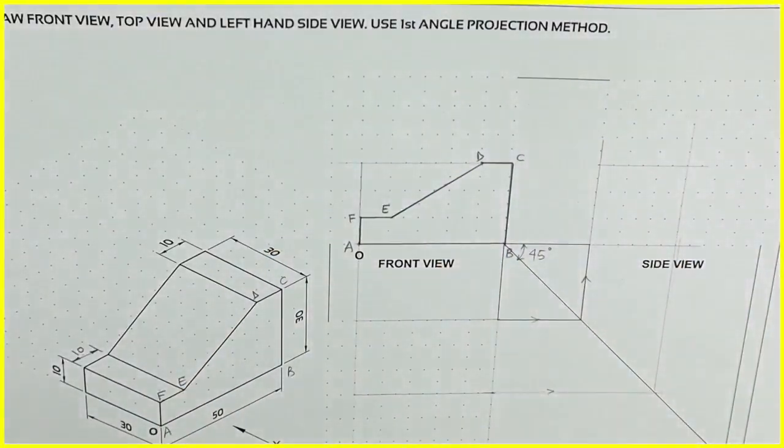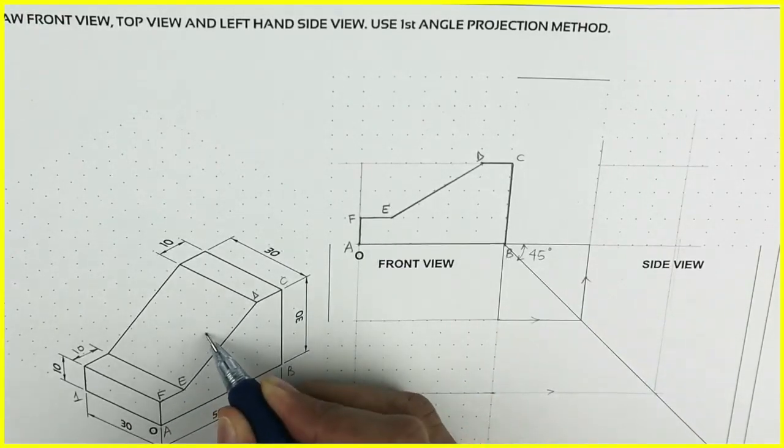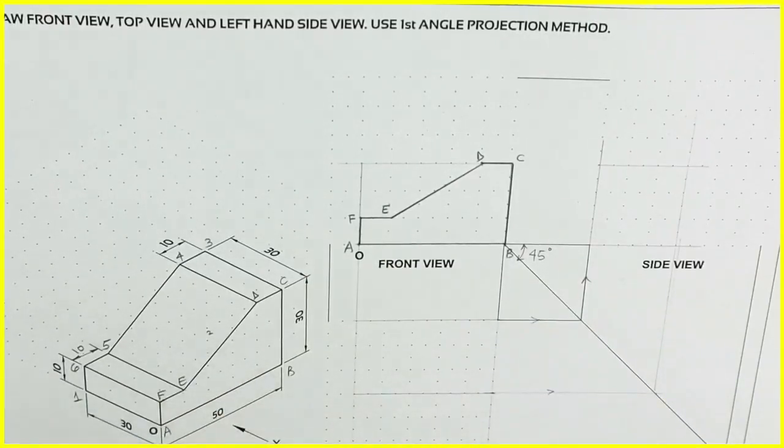So we are done with front view. And this is a front portion. So I can write behind as 1, 2, 3, 4, 5, 6. So that would be easier for understanding.